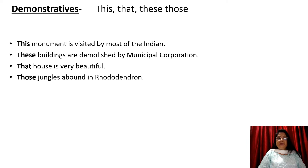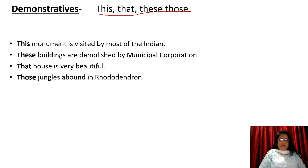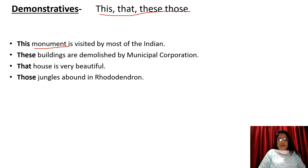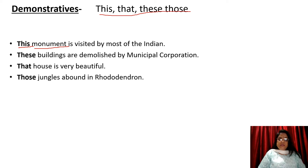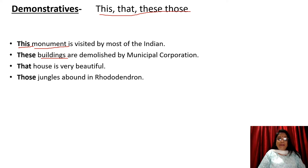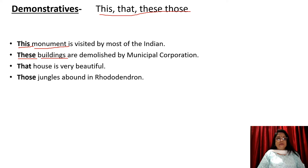Demonstrators means this, that, these, those. For example: 'This monument is visited by most of the Indians.' Here, 'this' is pointing to this monument, so 'this' is used as a determiner. 'These buildings are demolished by municipal corporation' — it is referring to these specific buildings, and since this is plural, we use 'these' as a determiner here.